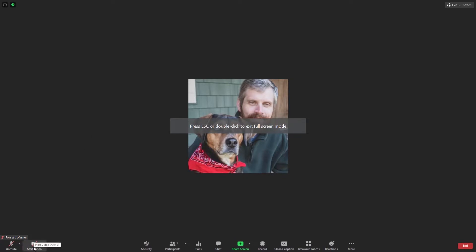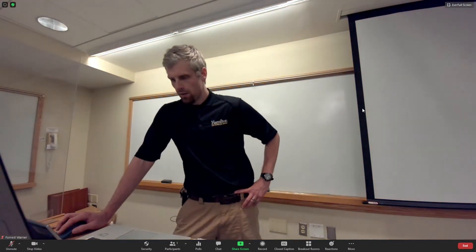If you go down to the start video button, there is a small caret next to that button. And you can see that we have three different sources available to us. One being the Logitech meetup camera, one being the camera built into my computer and one being the document camera. So we're going to start with the Logitech meetup camera. I'm going to go ahead and start the video. And there I am.